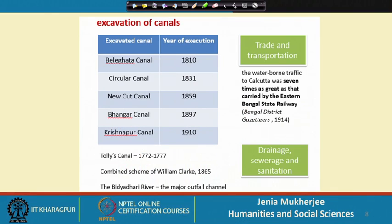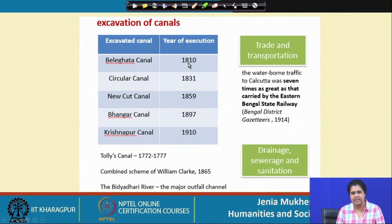The eastern canal system was devised, designed, and developed during the later half of the 19th century. It was connected to the river Bhagyati Hooghly on the west and the river Vidyadhari on the east, and Vidyadhari acted as the major outfall channel for this entire urban area. The names of the canals within the eastern canal network are Beleghata canal, circular canal, Newkart canal, Bhangar canal, and Krishnapur canal — all constructed between 1810 and 1910.